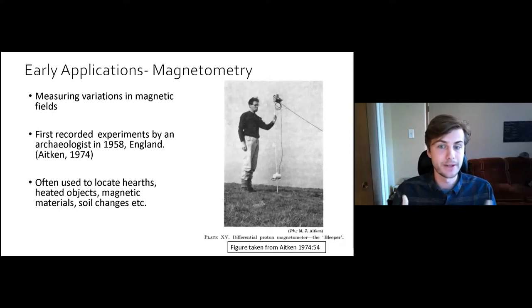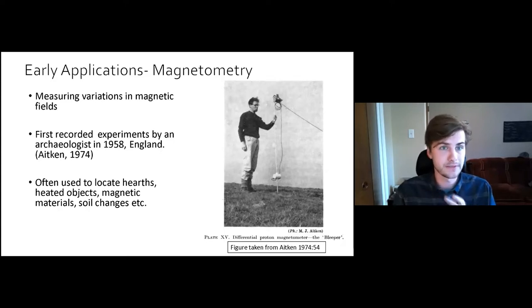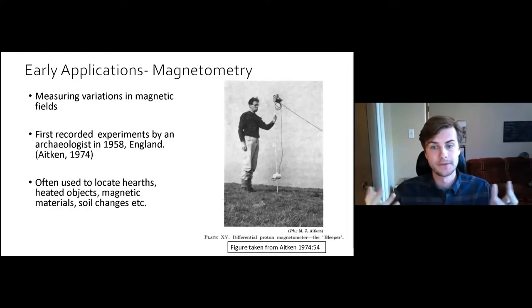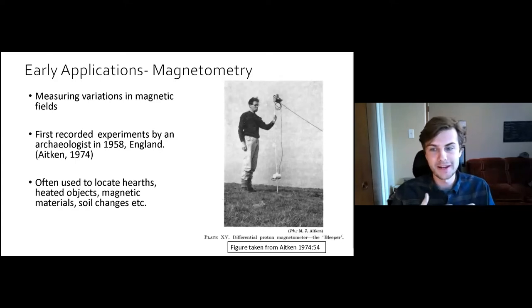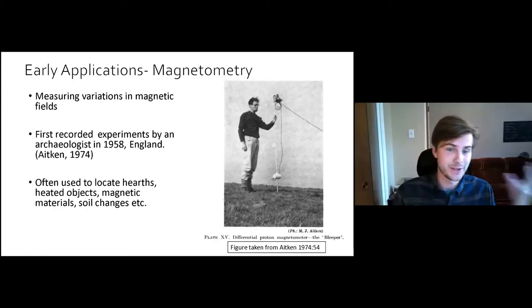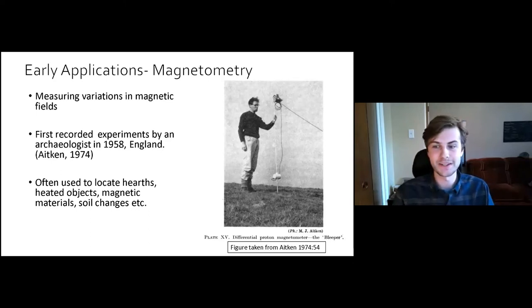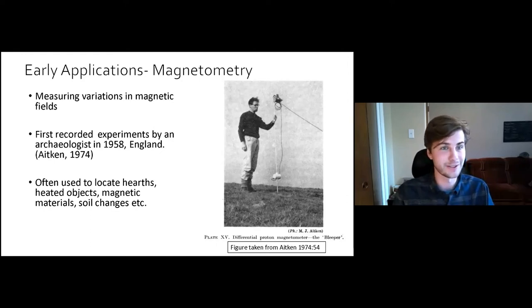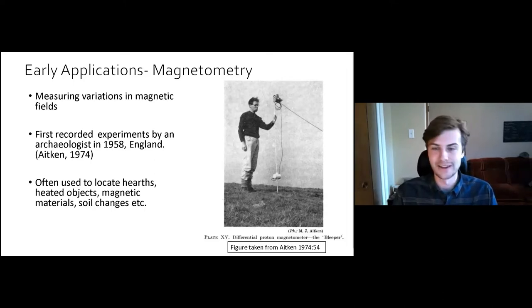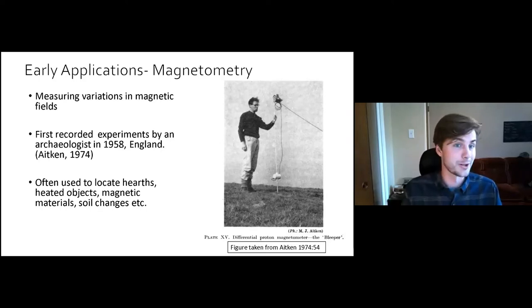Starting in the late 1950s, folks began to experiment with techniques to locate ancient hearths, previously heated objects, metal, and soil changes from disturbed ground. There are also papers suggesting this technique can be used to locate unmarked graves. Magnetics is a funny technique because it is quite simple as well as beautifully complex. A lot of archaeologists have weird relationships with the technique and give their instruments funny nicknames — one of the first magnetic instruments used in archaeology was known as the bleeper because of the sound it made. It's actually an early proton magnetometer, and this kind of got the ball rolling for archaeological geophysicists.